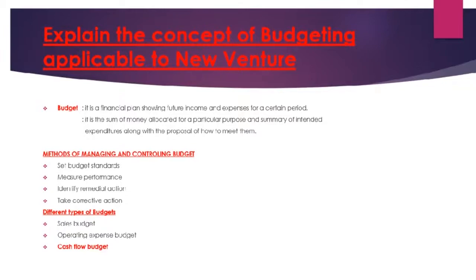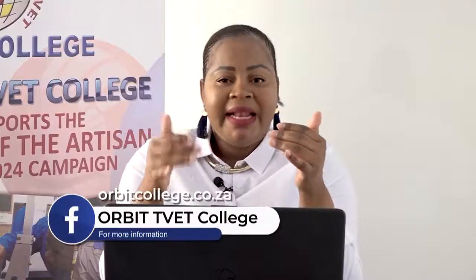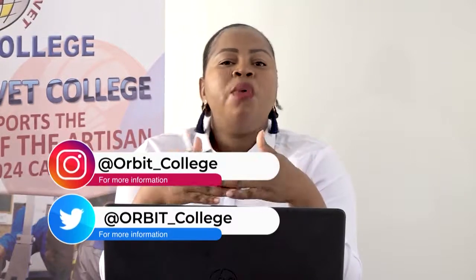First, we need to explain what we mean when we talk about a budget. Budget is a generic word we use everywhere, but we need to understand what we are talking about. A budget is a financial plan which shows the future income or expenses for a certain period. When you say you are making a budget, you are planning ahead. Normally we do our budget on a monthly basis or on a quarterly basis.